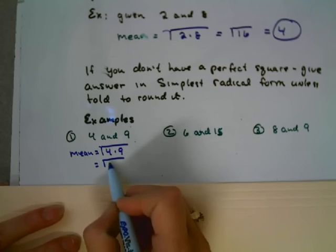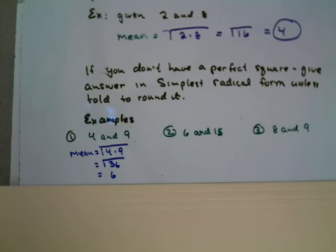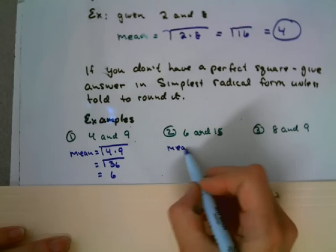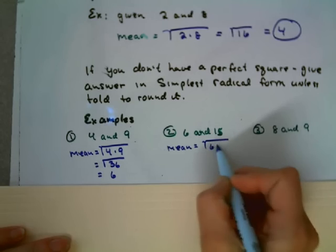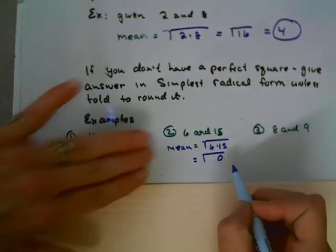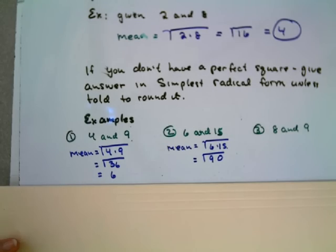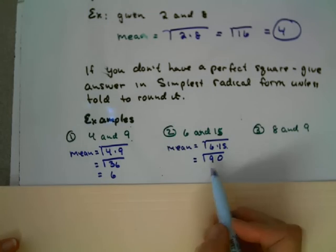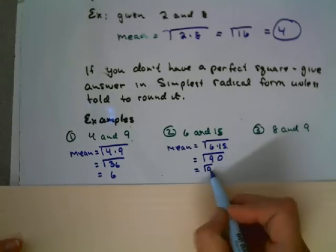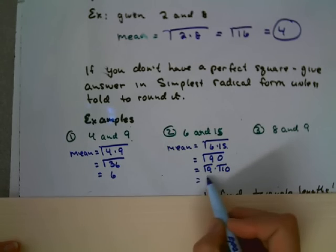Now what about 6 and 15? Well, the mean is going to be the square root of 6 times 15. Which is the square root, 6 times 5 is 30, put down the 0, carry 3, 6 times 1 is 6, 7, 8, 9. That is not going to be pretty. But I see a 9 in here. 9 times 10 would be 90. And I think 9 is a perfect square. So I'm going to call that the square root of 9 times the square root of 10. That's the same as square root of 90. Well, the square root of 9 is 3. So I end up with 3 square root of 10. And that is my final answer in simplest radical form.